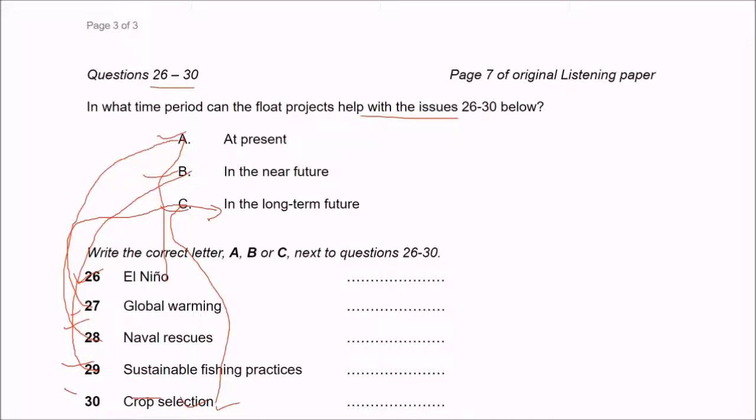So you have just heard the scientists speaking, and while speaking, I have also tried to match them and let me answer them formally now. So El Nino, he said that at present they are able to predict and answer these questions about El Nino. Then about global warming, he said that this is a long-term future plan, but it will eventually come. So that will be our C.